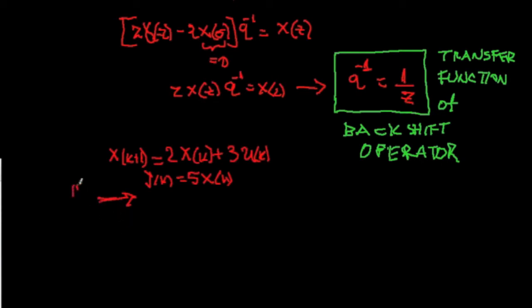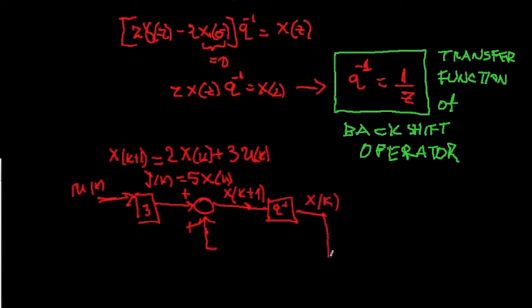So, we claim the following. u(k) hits the box here, which is just gain element 3. From here, it gets summed into another signal and generates x(k+1), hits the backshift operator, generates x(k) and it's fed back by the gain and amplified by the gain 2 to generate this signal here.